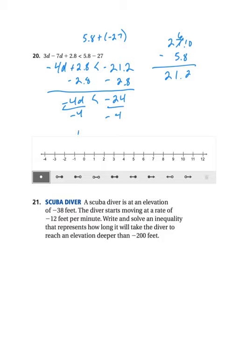And then I'm going to divide by negative 4. I get d on the left side. I get positive 6 on the right side. And because I divided by a negative, I'm going to flip that symbol. So that means I have an open circle on 6. And d is greater than 6. So I am moving to the right.